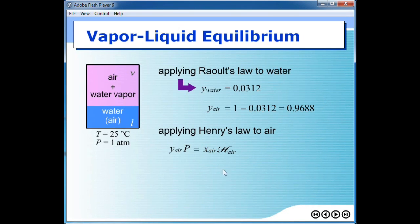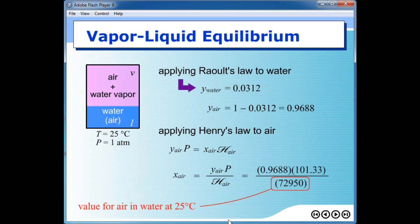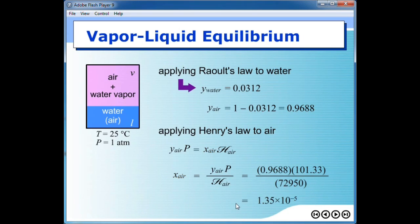We apply Henry's law written for air. Rearranging the equation, we can get the mole fraction of air in the liquid phase as y_air times P divided by Henry's constant. Henry's constant is found to be about 72,000, taken from the handbook. Note that Henry's constant is a characteristic property of a pair of species — in this case air and water — and it is also a function of temperature. At 25 degrees Celsius the value is as given. Plugging in the numbers, you get the mole fraction of air in liquid water to be very, very small — about 1.3 times 10 to the power of minus 5.